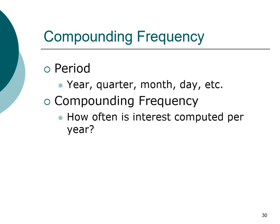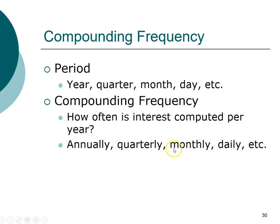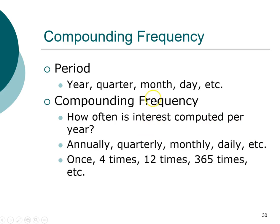Compounding frequency refers to how often interest is computed per year. For example, most of us have to pay a credit card at the end of each month, so that payment occurs on a monthly basis. That is true for car payments, rent, mortgage payments, and so forth. Dividends are typically paid on a quarterly basis. A bank may compute interest on a daily basis when a company deposits cash received at the end of each day. So if you make monthly payments on your credit card, that's a compounding frequency of 12 times per year.